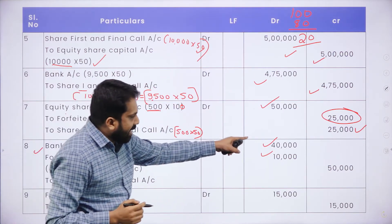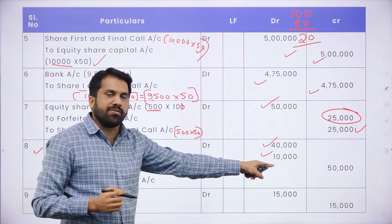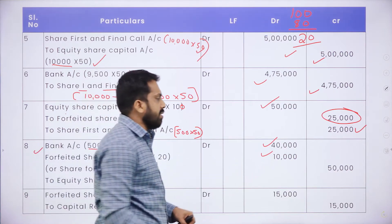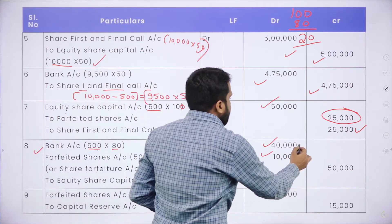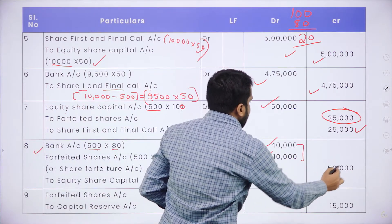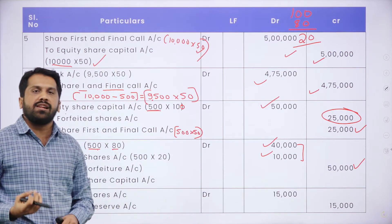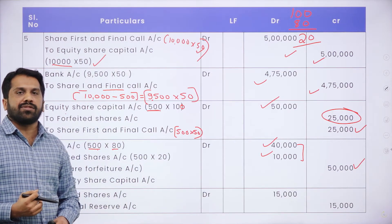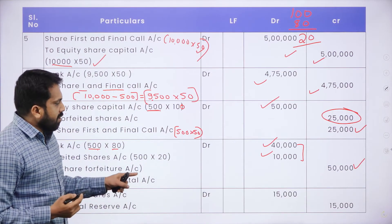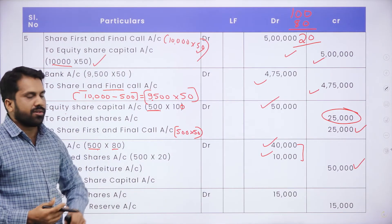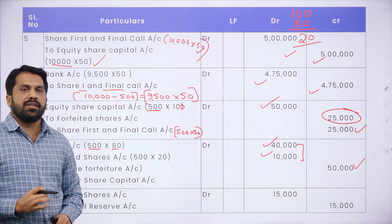Total credit to Equity Share Capital: ₹40,000 + ₹10,000 = ₹50,000. Your 8th journal entry is complete.